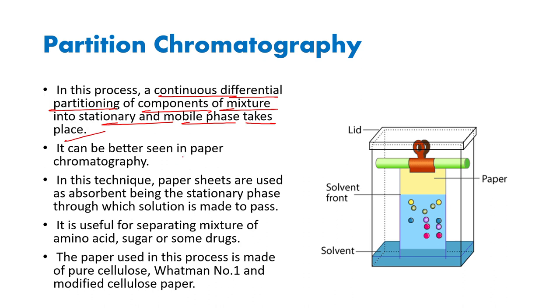The best example is paper chromatography. This technique is similar to TLC, but instead of using a TLC plate, we actually use cellulose paper. It is useful for separating mixtures of amino acids, sugars, or some drugs. The paper used can be pure cellulose, Whatman No. 1, or modified cellulose paper.